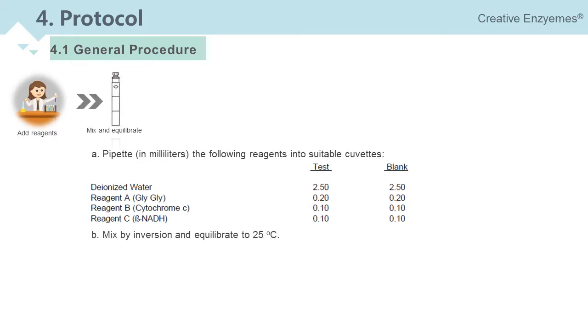Second, mix by inversion and equilibrate to 25 degrees centigrade. Third, monitor the absorption at 550 nanometers until constant by using a suitably thermostatic spectrophotometer.